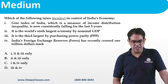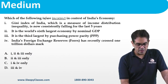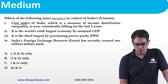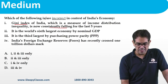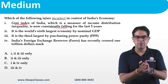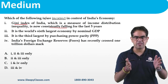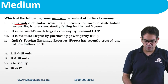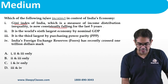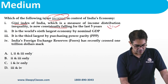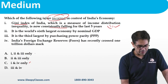Regarding the Indian economy: Gini index, which measures inequality, is consistently increasing — not falling. This means the gap between rich and poor in India is growing. So the first statement (saying it is falling) is incorrect. India is the sixth largest economy by nominal GDP — not second. Third largest by PPP — this is correct. India's forex reserves crossed ~600 billion dollars, not 1 trillion as stated — so statements 1 and 4 are wrong.